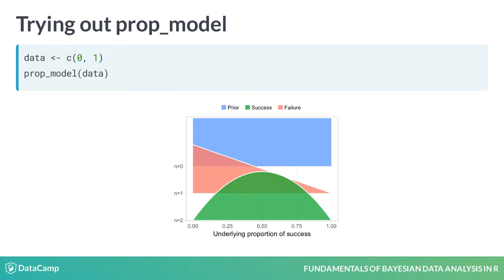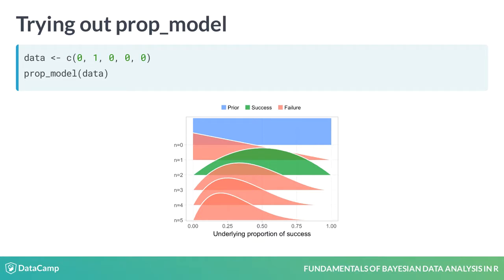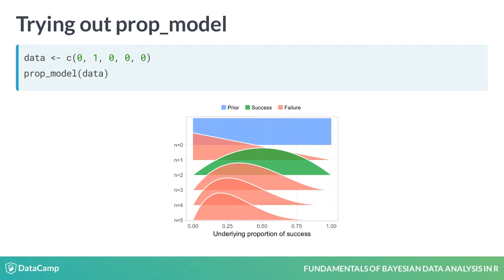The next three patients didn't get cured, and for each failure it becomes more and more probable that the underlying proportion of success is low. A final cured patient, and what we know at the end of the experiment after six data points is that the underlying proportion of success is probably around 0.4. But with this little data there is large uncertainty, and it could be as low as 0.10 or as high as 0.75.